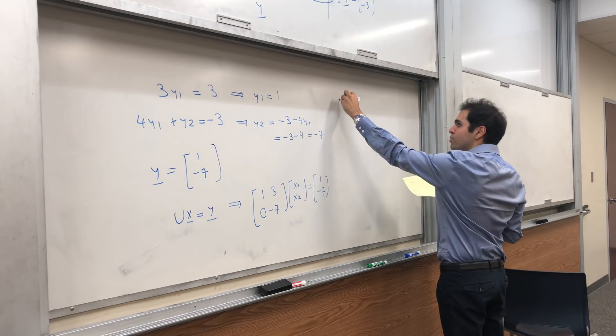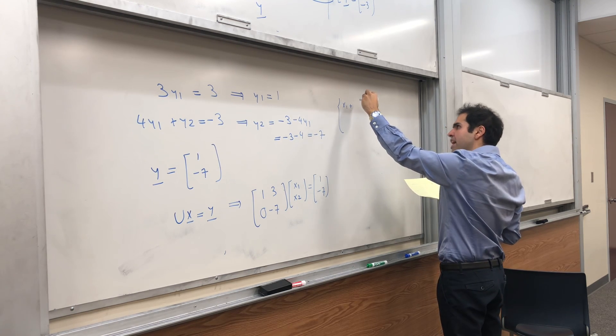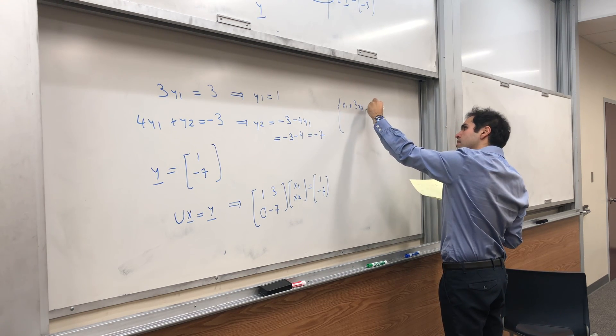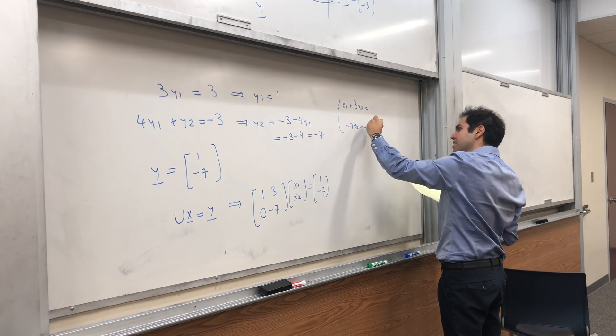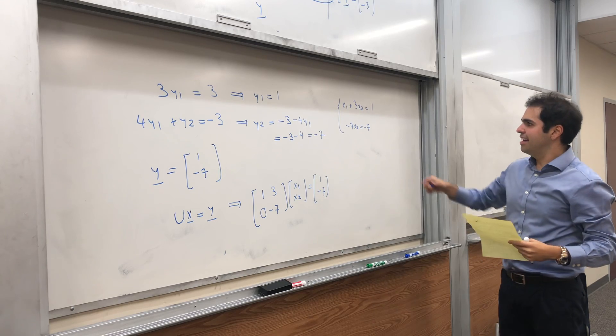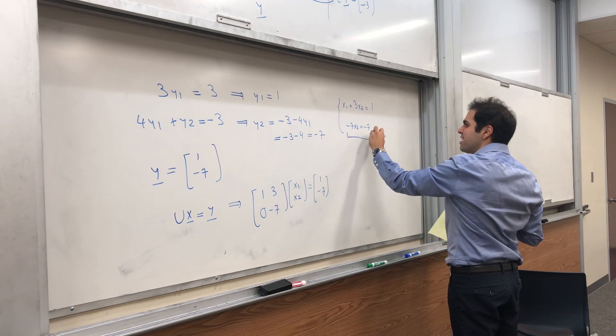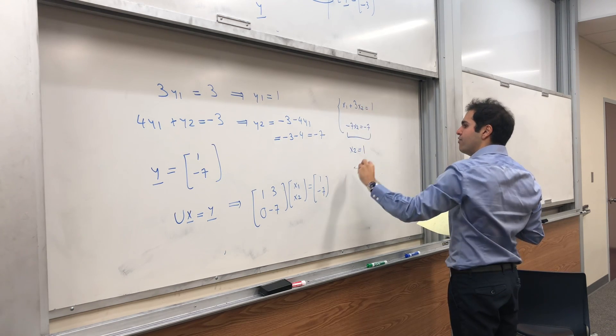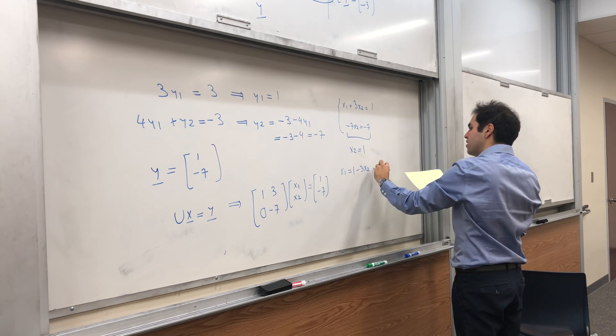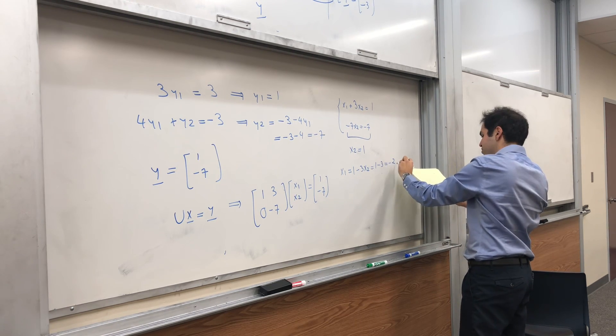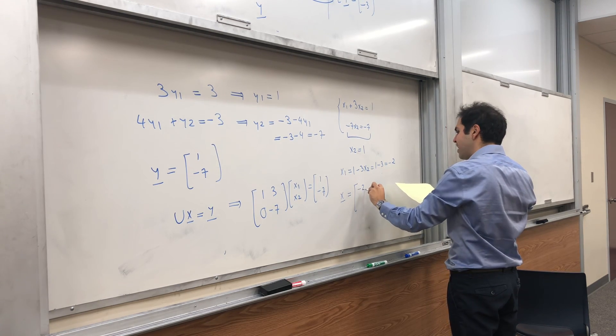And, then, you just write it in terms of systems. So, X1 plus 3X2 equals 1, and minus 7X2 is minus 7. And, again, you see, we get an easier system. So, from this, we get X2 equals 1. And, from this, we get X1 is 1 minus 3X2, and that's 1 minus 3, and that's minus 2. And, so, our solution, in the end, is minus 2, 1.